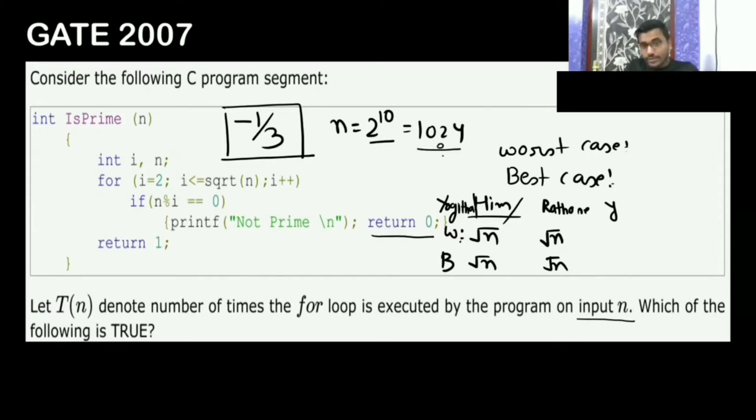It is divisible by 2, remainder is 0. Then it will go here, condition satisfied, printf no prime, return 0. It will go out of this function. Here you are having a return statement.